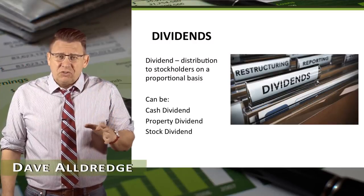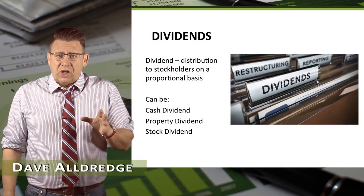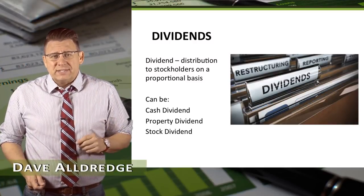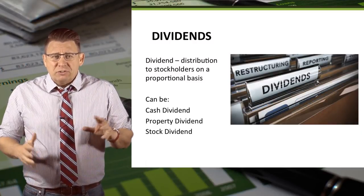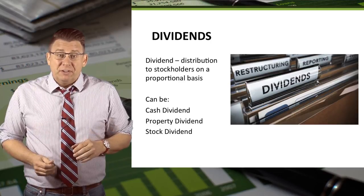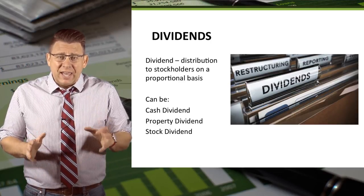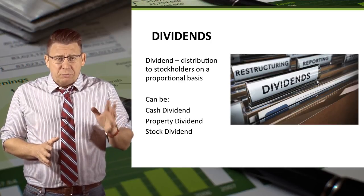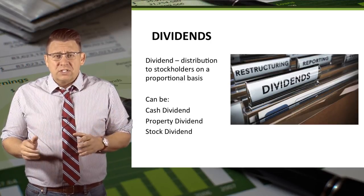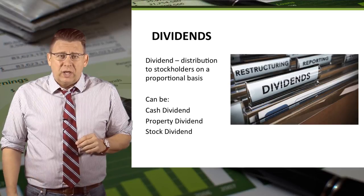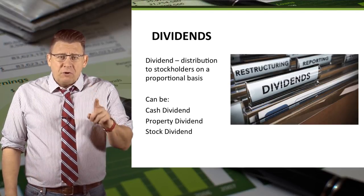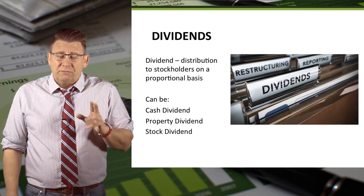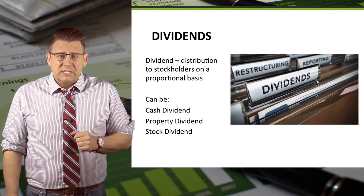A dividend is a distribution to stockholders on a proportional basis. The most common type of dividend is a cash dividend, but it could also be property or stock dividends as well. The focus of this video will be accounting for stock dividends.